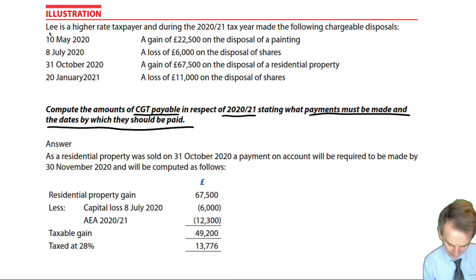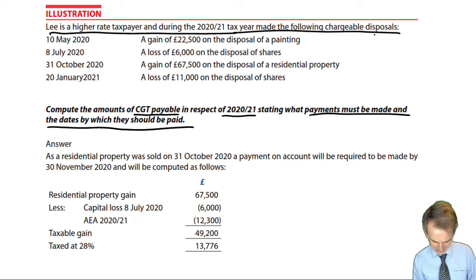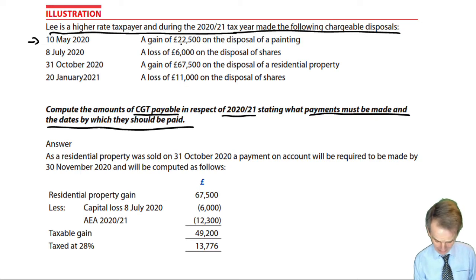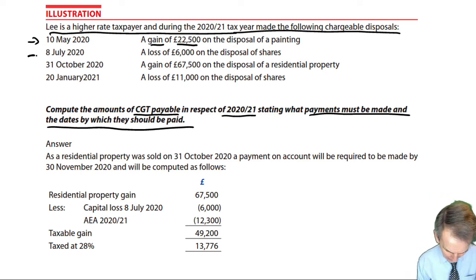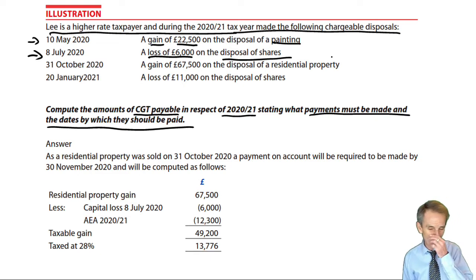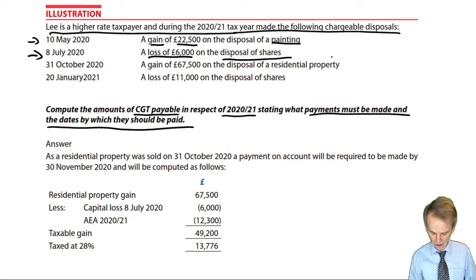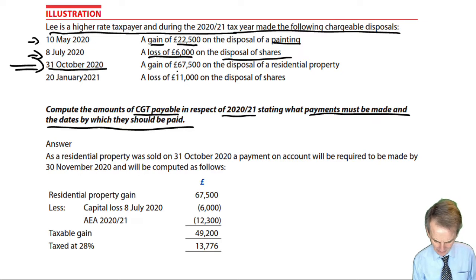Lee is a higher rate taxpayer and during the 2021 tax year made the following chargeable disposals. On the 10th of May 2020: a gain of £22,500 on disposal of a painting. Then a loss of £6,000 on disposal of shares. These are other assets — not residential property — so the lower CGT rates apply. Then, critically, on the 31st of October 2020: a gain of £67,500 on the disposal of a residential property.